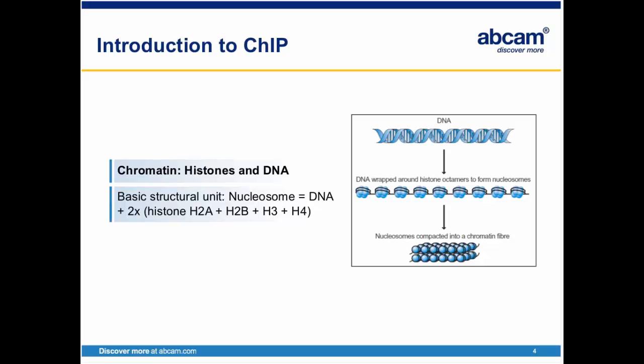As the name suggests, in ChIP we precipitate chromatin. Chromatin is comprised of histones and DNA. 147 base pairs of DNA chain wrapped around the 8-core histone forms the basic chromatin unit called the nucleosome. Each nucleosome contains two subunits with each of histones H2A, H2B, H3, and H4, known as the core histones.